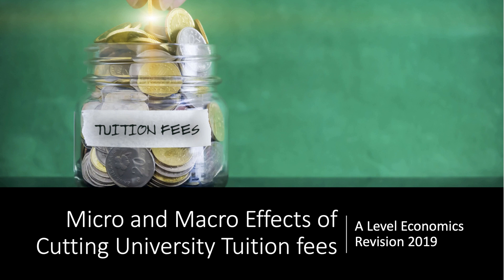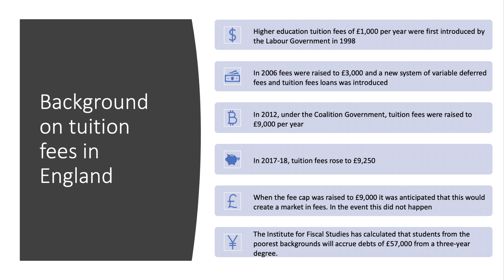Welcome to a quick synoptic revision video looking at some of the possible micro and macroeconomic effects of a cut in university tuition fees. Tuition fees initially came in in 1998 at £1,000 per year paid up front, introduced by the Labour government. They increased to £3,000 in 2006 with a system of variable deferred fees and student loans. The big change was in 2012 when the tuition fee cap was raised to £9,000 per year, edging slightly higher now to £9,250. When the government lifted the cap to £9,000, they were hoping to create a market in fees where universities would compete with each other. In the event, nearly all universities charge the maximum fee, so there is virtually no competition by price.